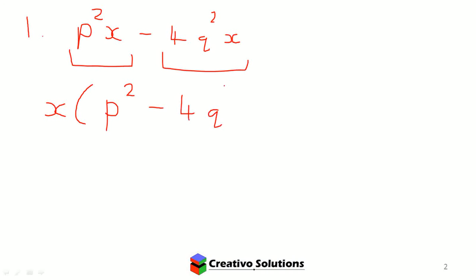So I'm going to take out a common factor of X. Then what's left would be P squared minus 4Q squared. That's what's left over, because if I distribute the X into the P squared and the X into the minus 4Q squared, I'm going to get the same expression as I had at the top.